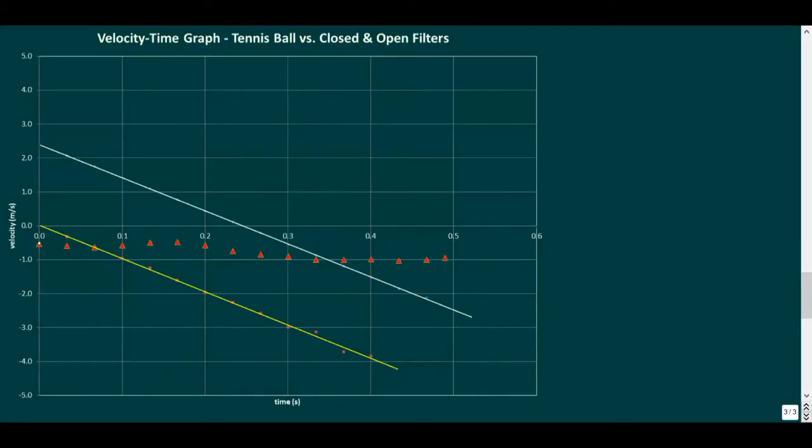Now here the open filter doesn't appear to obey Galileo's law. That's because although we can't see it, and the interaction is relatively weak, the filter is falling through air. If enough of the air can impede the motion of the filter with a force that equals the force of gravity, an object reaches what's known as its terminal velocity.